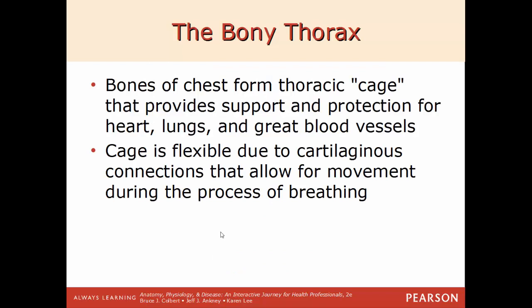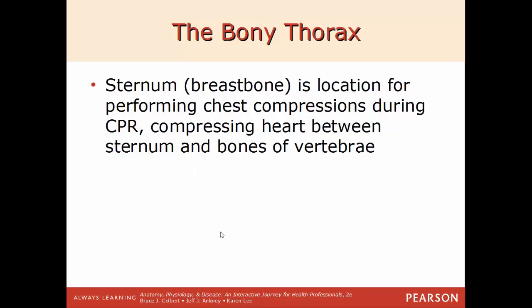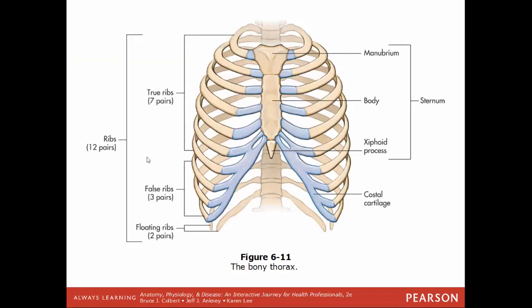Next we'll talk about the thorax. This forms the thoracic cage that provides support and protection for the heart, lungs, and larger blood vessels like the aorta. This cage is flexible to allow movement for respiration, especially when taking a deep breath. The breastbone or sternum is the location for chest compressions during CPR — it compresses the heart between the sternum and the vertebrae behind it. The first seven pairs of ribs are the true ribs, the next three pairs are the false ribs, and the last two pairs are the floating ribs.